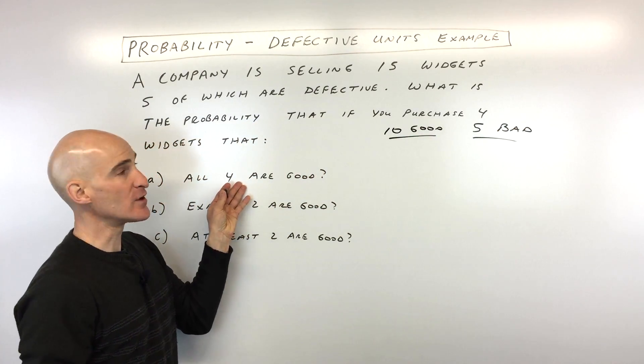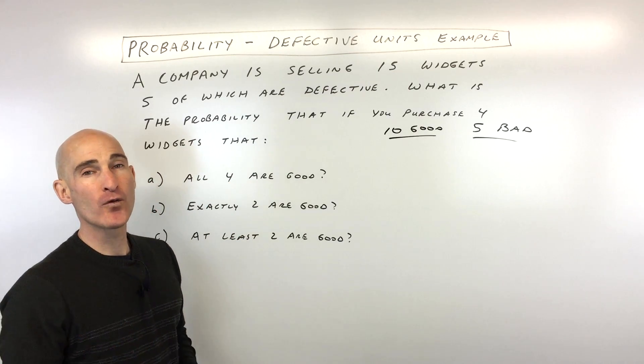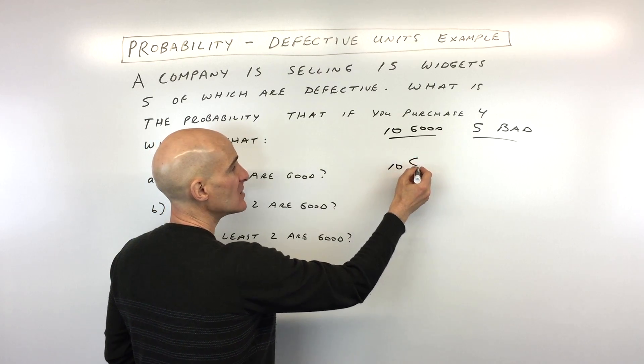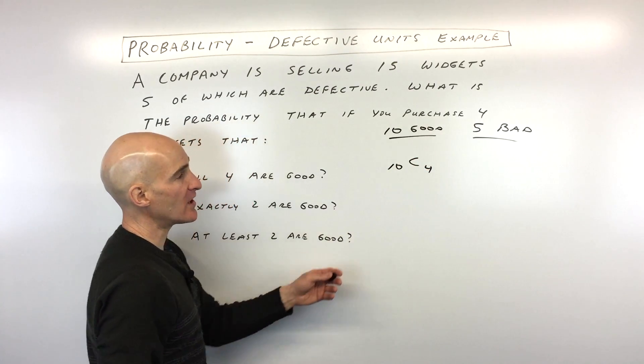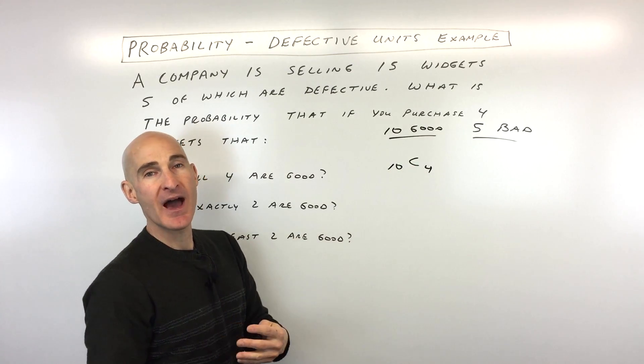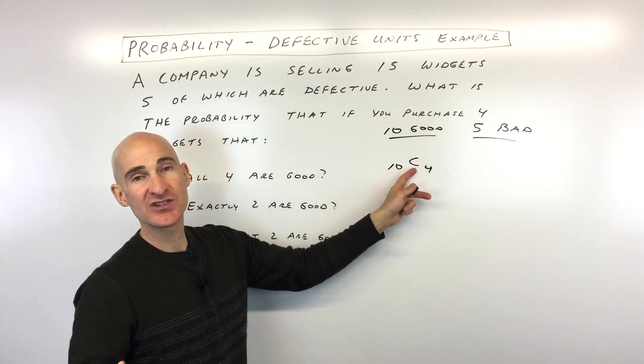But we want all four to be good. So how many ways can you get four good widgets out of the 10 that there are that are good? So that's going to be 10 combination four. So out of 10 objects, how many ways are there to choose four? The order doesn't matter. Okay, so that's why we're using combinations and not permutations.